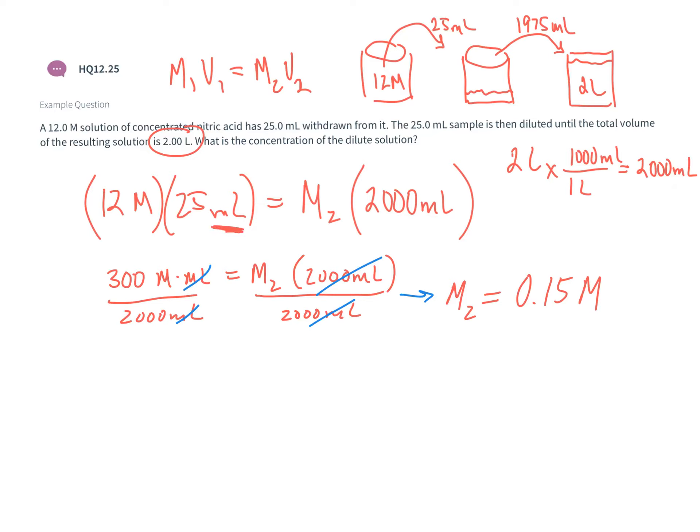Your volume needs the same units on both sides of the calculation—either milliliters on both sides or liters on both sides. Otherwise the calculation won't work. Since our volume was already 25 milliliters, I converted the second volume, 2 liters, to milliliters as well before doing the calculation.